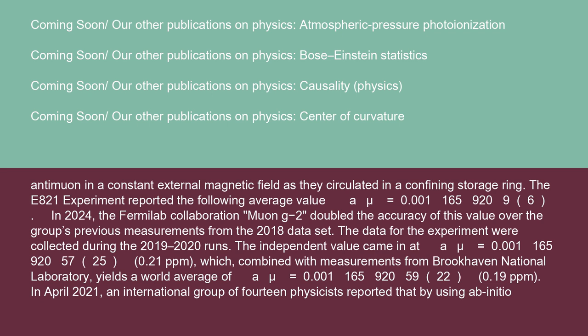In 2024, the Fermilab collaboration, Muon g-2, doubled the accuracy of this value over the group's previous measurements from the 2018 dataset. The data for the experiment were collected during the 2019-2020 runs.